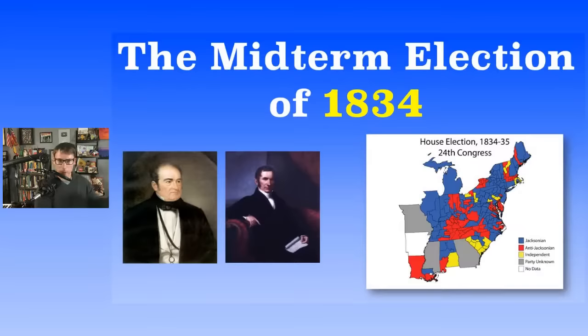The Whigs' momentum would start to pick up for the rest of the decade. Now we get Martin Van Buren in there after Andrew Jackson completes his second term, and Van Buren wins in 1836.